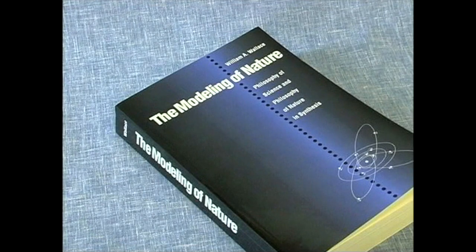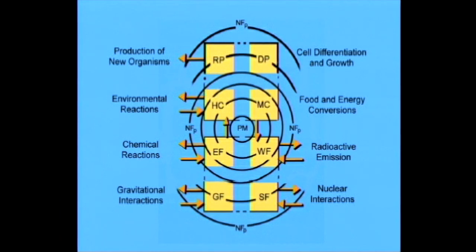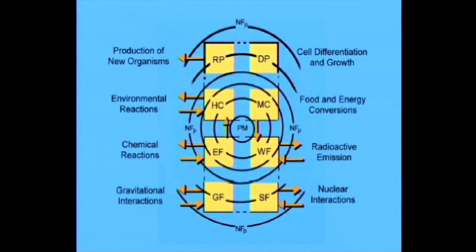Adapting to modern usage, we shall change their names slightly from those used by Aristotle. We enumerate these four powers with their symbols as shown in Figure 4.1 on page 95 of The Modeling of Nature. The powers are: homeostasis control (HC), metabolism control (MC), the developmental power (DP), and the reproductive power (RP). These are the four basic vegetative powers. These must be added to the four inorganic powers already enumerated, to provide a total of eight powers to account for all the activities of a plant's form.